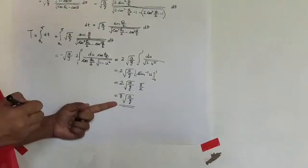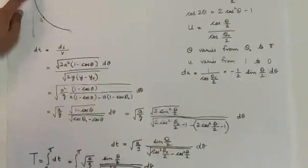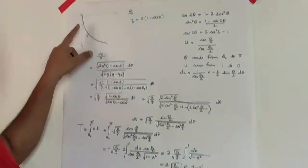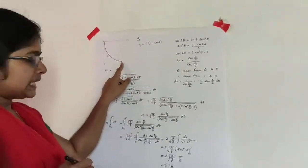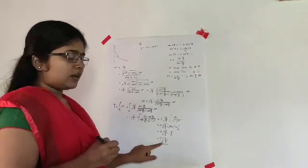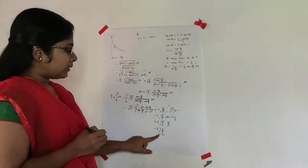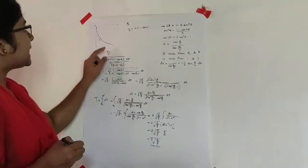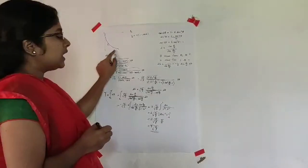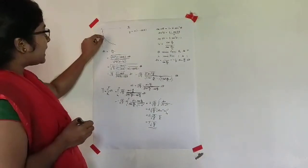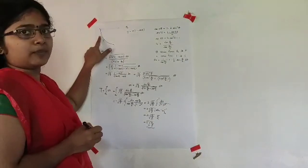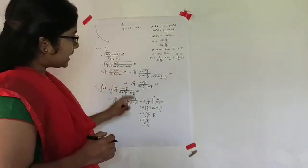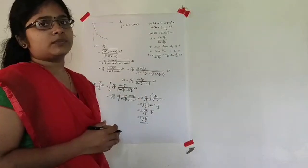So when we take an arbitrary point on this curve, the time taken for the bead to slide from that point to the lowest point is π√(a/g) — the same time as from the origin. We have proved that in a cycloid, the time taken for a bead to slide from any point on the curve to the lowest point is the same. This is the Tautochrome problem, and we have proved that the cycloid satisfies it. Thank you.